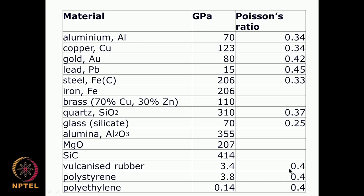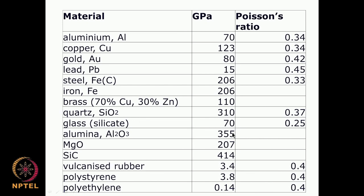As you can see, for many rubbers the Poisson's ratio is 0.4 — that means the strain ratio is almost half from each other. For steel the Poisson's ratio is about 0.33, aluminum is 0.34, so many metals are in the range of 0.3 to 0.4. Looking at Young's modulus, steel is very high at 200 GPa, aluminum is only 70, copper is about 120. Quartz has a very high Young's modulus of around 300 GPa, whereas rubber-like materials have a very low Young's modulus of about 3 GPa. Oxide ceramics — alumina, quartz, magnesium oxide — are all quite high compared to metals like aluminum, copper, gold, and lead.